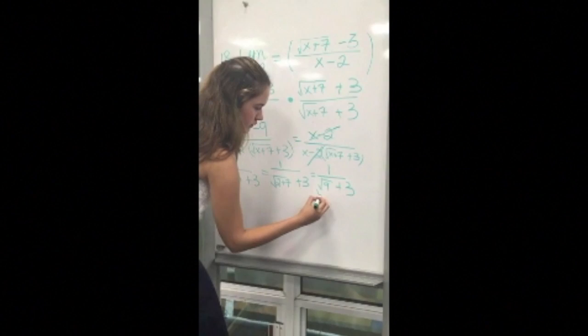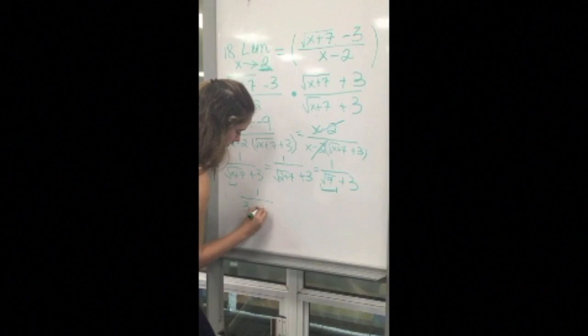As we all know, the square root of 9 is 3, so you have 1 over 3 plus 3, which equals 1 over 6.